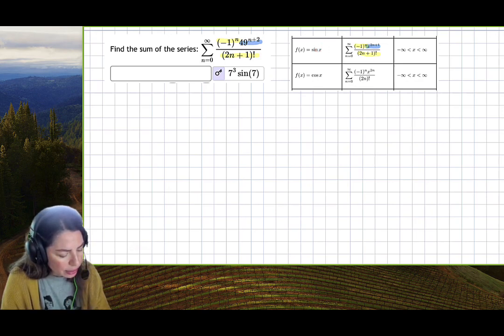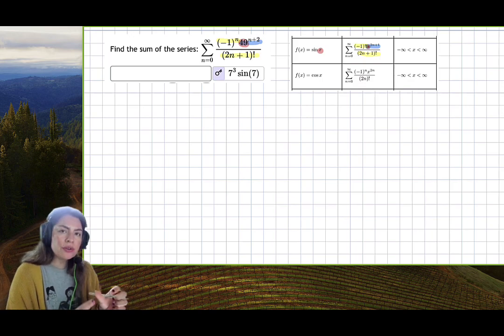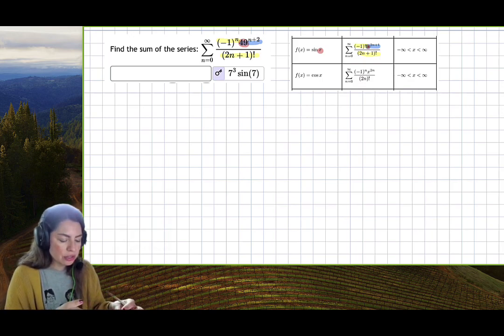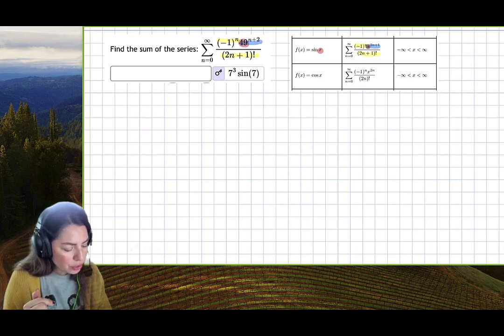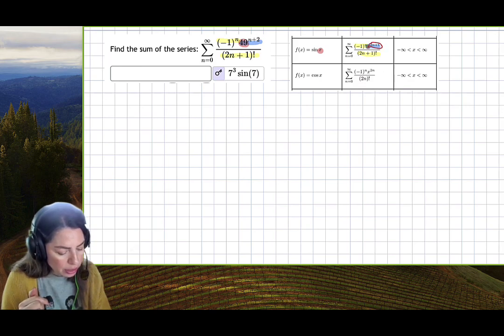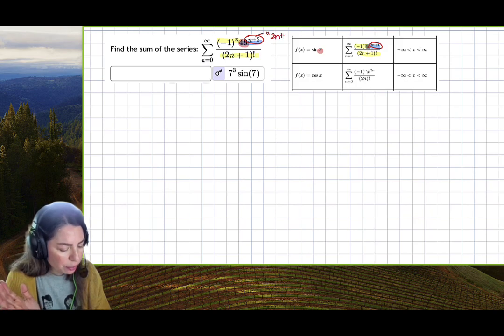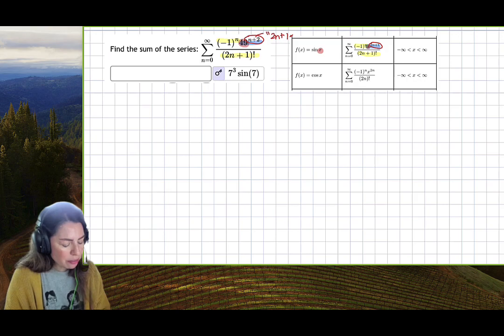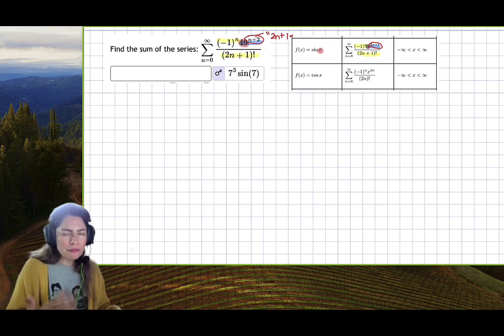Notice that x base here is the 49 base here, which is the same as this angle. I'm going to highlight that in red. This red, this red, and this red. That angle is whatever the base turns out to be. But I need an exponent of 2n plus 1. We can play with series; we have good algebra skills at this point.